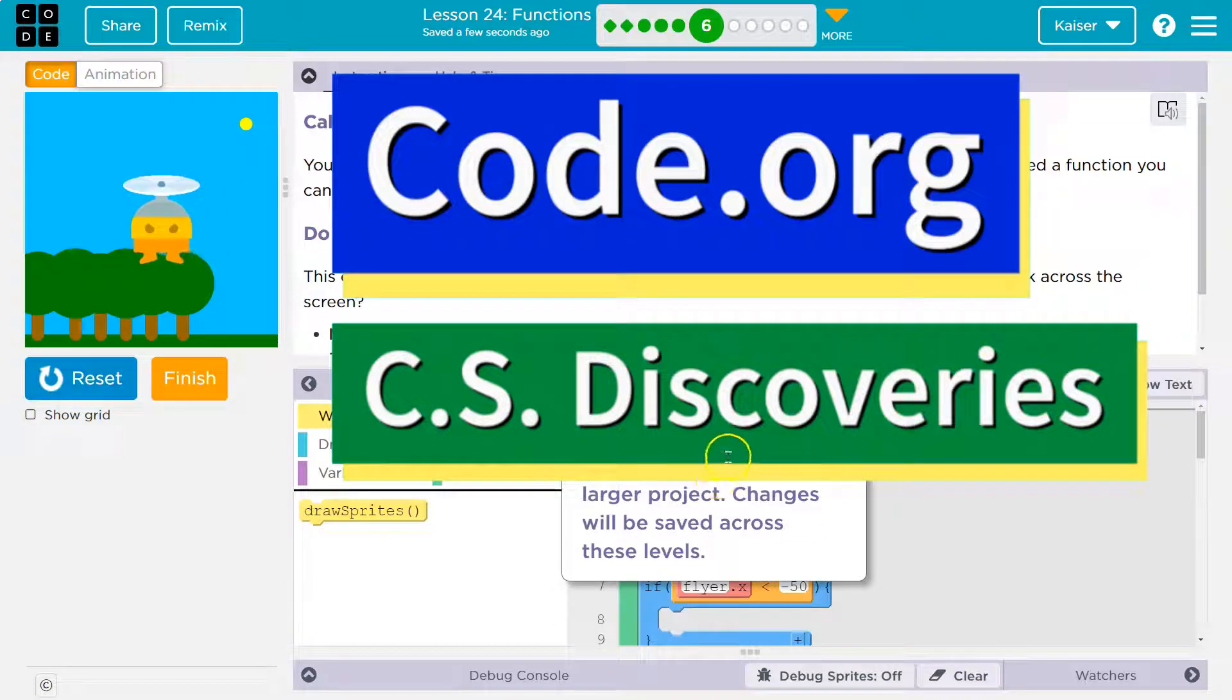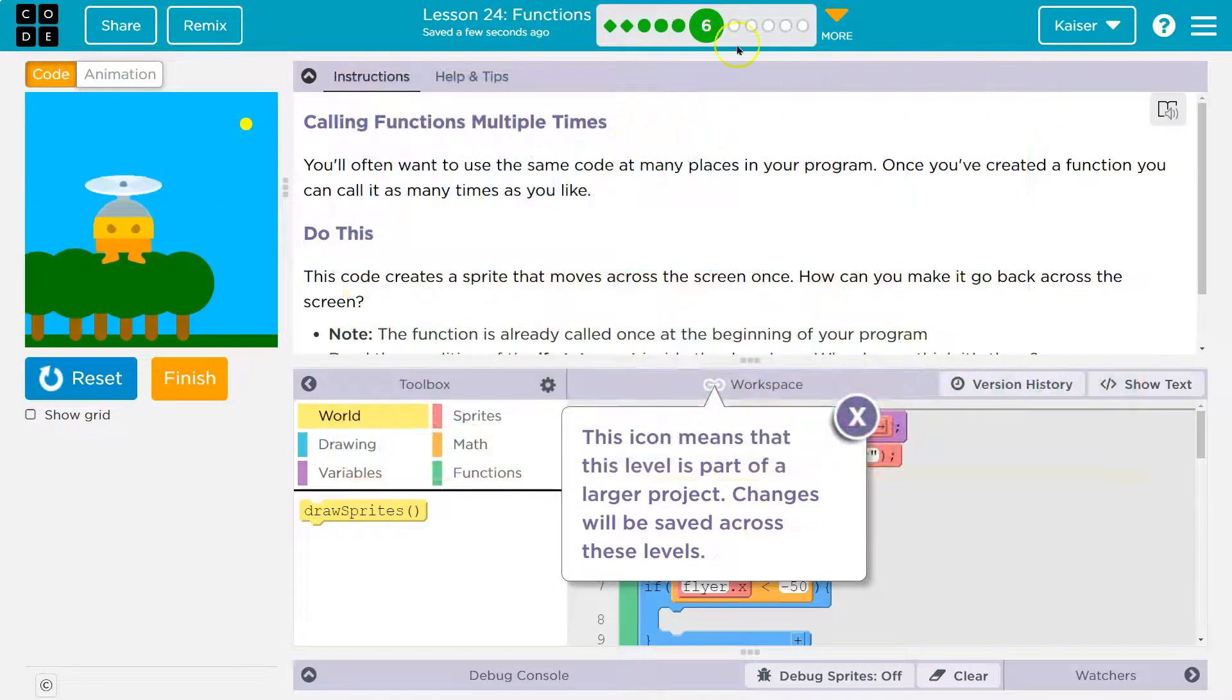This is Code.org. Let's see. This icon means that the level is part of a larger project. So I think this has the code from our last time. All right.